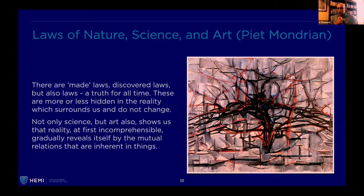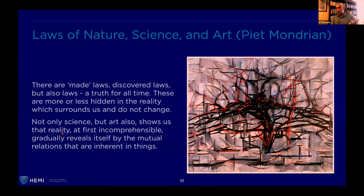To make a connection, let me mention Piet Mondrian, a relatively famous artist from the last century. He did a painting on the right which is supposed to be like a tree, but you can also see the granular structure. He said: 'There are made laws, discovered laws, but also laws which are a truth for all time — more or less hidden in the reality which surrounds us and do not change. Not only science, but art also shows us that reality, at first incomprehensible, gradually reveals itself by the mutual relations that are inherent in things.' These connections between the grains, these mutual connections — that's what dominates the behavior.